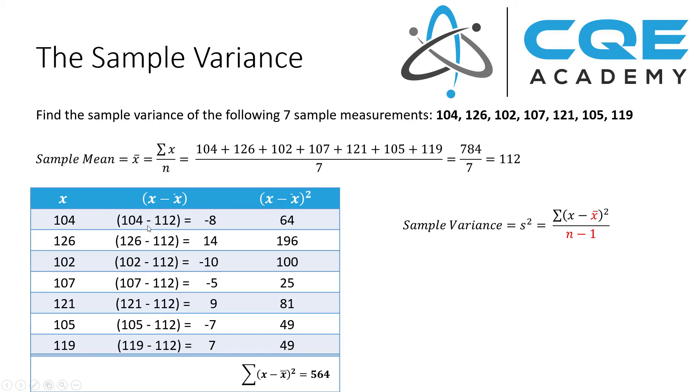For example, 104 minus the sample mean of 112 is minus 8. 126 minus the sample mean of 112 is 14. And on and on down the list, we can compare our individual measurements against the sample mean to come up with a value.